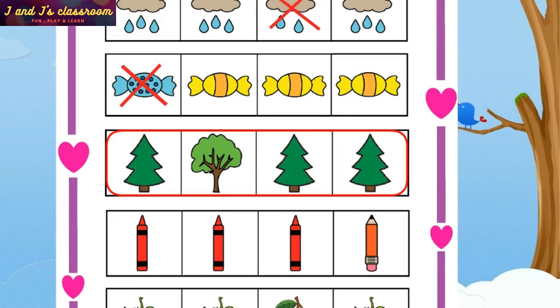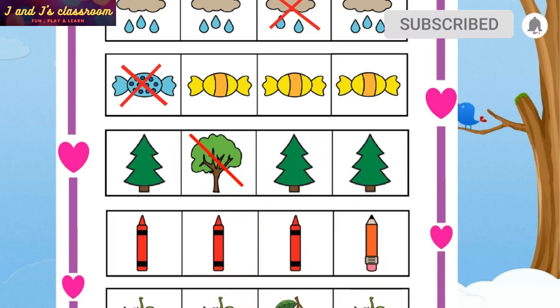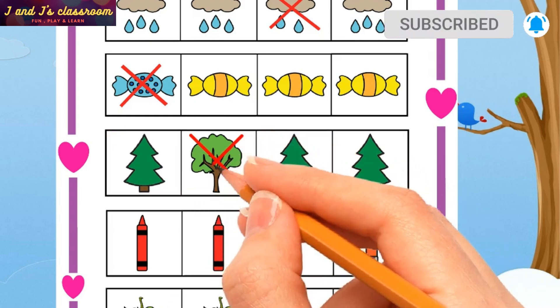Next, look at the third row — there are four trees. One is different from the other three trees. Can you guess which one? This tree! Oh yes, cross out that tree.